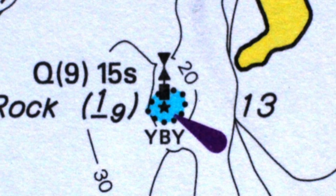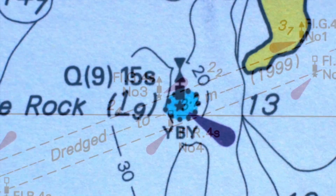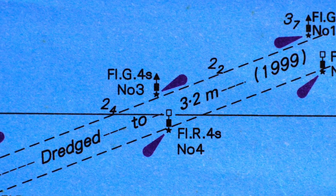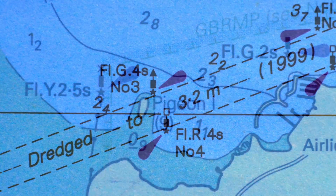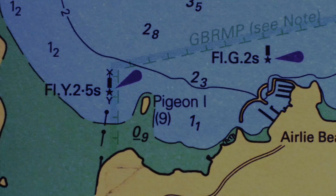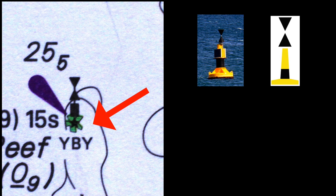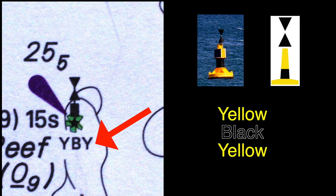The buoys on a marine chart have a symbol and a code to show the colour and light pattern. Standard marine charts show the buoy as a black and white symbol. The colour of a buoy is written as letters underneath — Yellow, Black, Yellow — indicating a West Cardinal Mark.